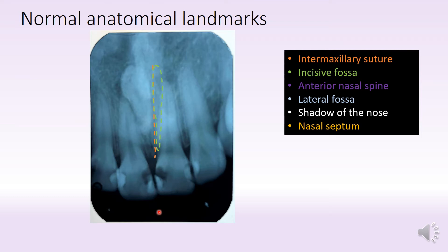Then we have the anterior nasal spine, which is the most radio-opaque structure seen there — dense, way up somewhere near the area of the nose. And you have the lateral fossa; you can in fact see the lateral fossa on both sides. It's a depression where there's a lesser amount of bone density, and that's why it appears as a lateral fossa.